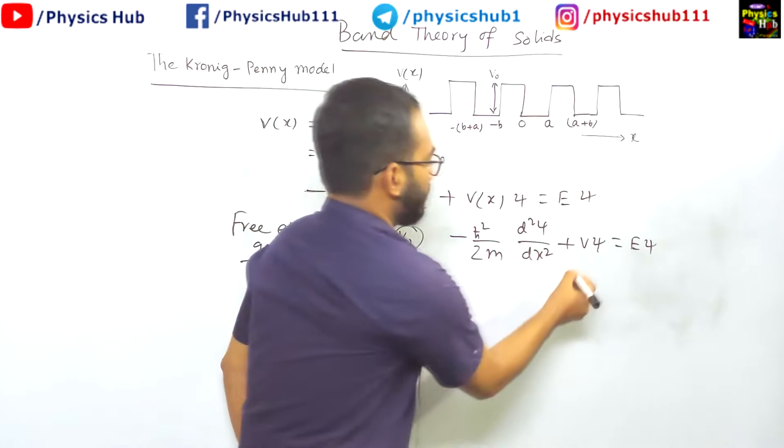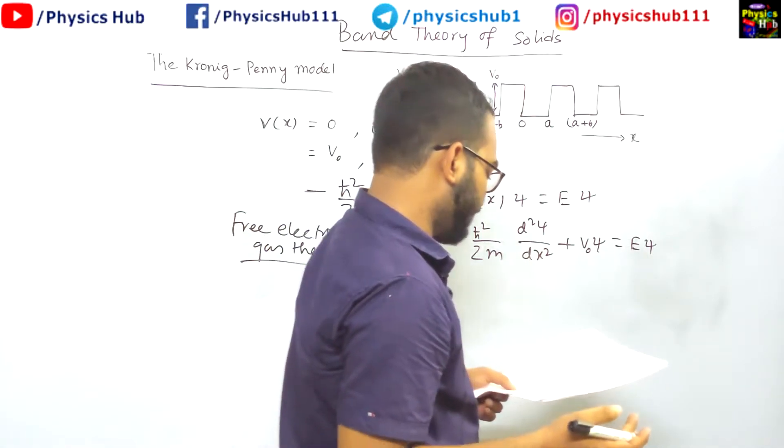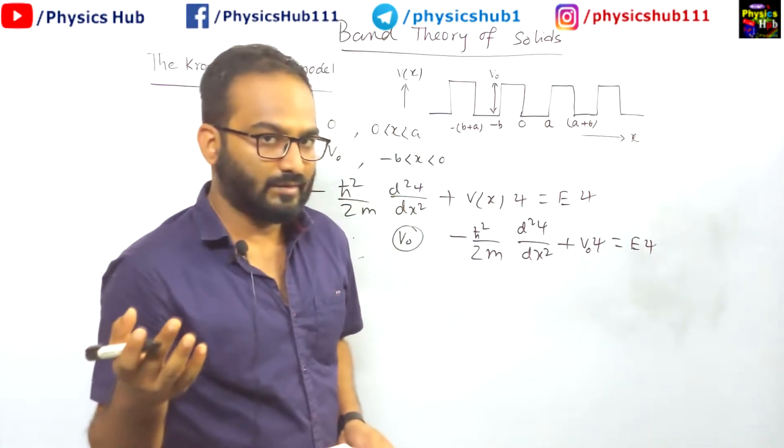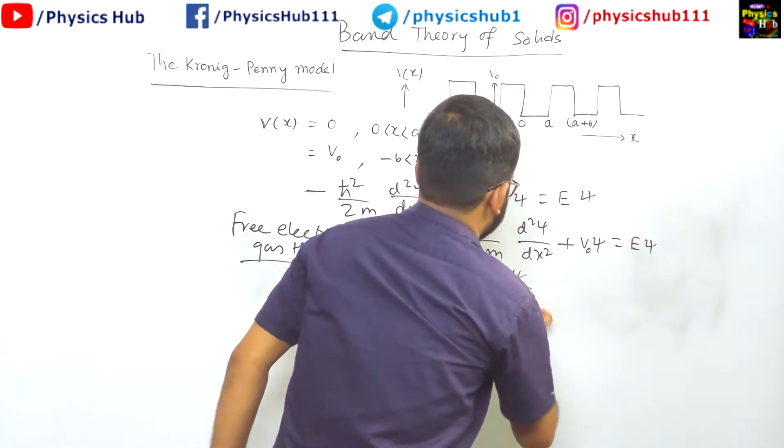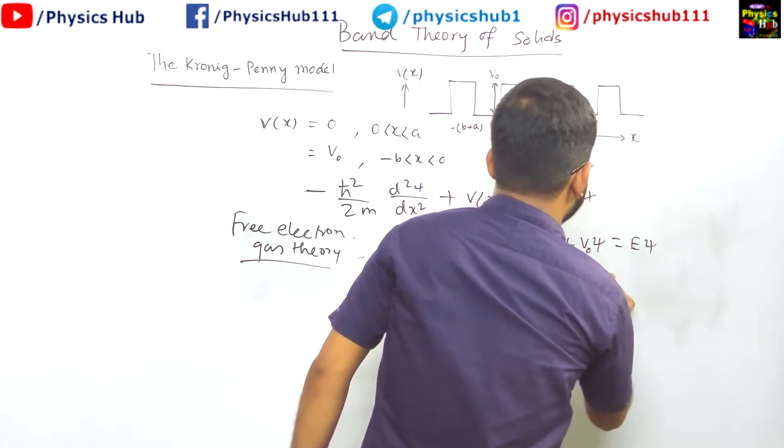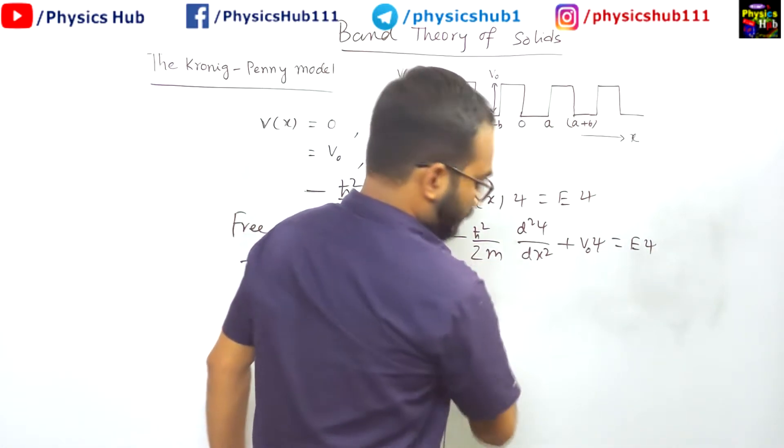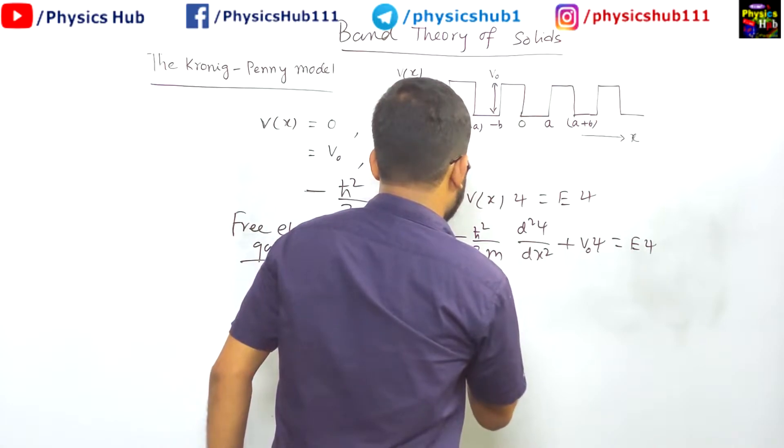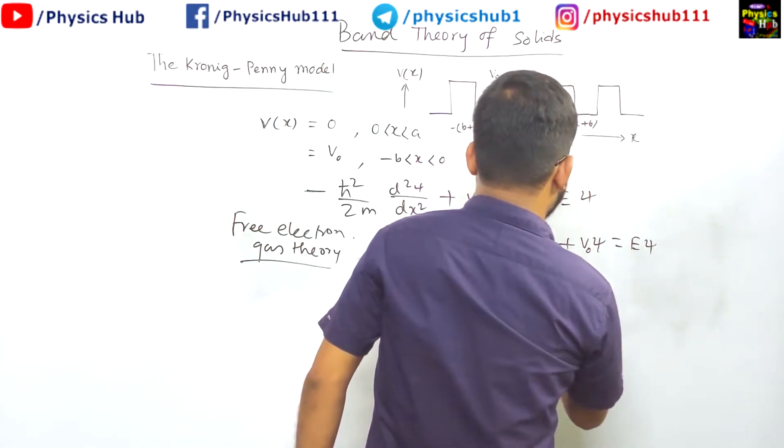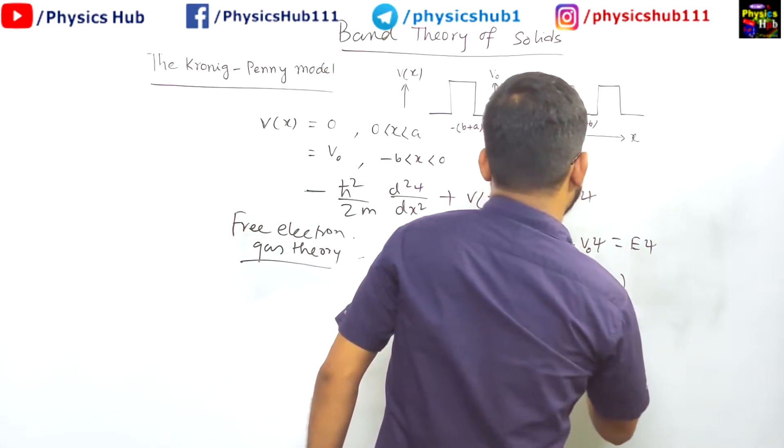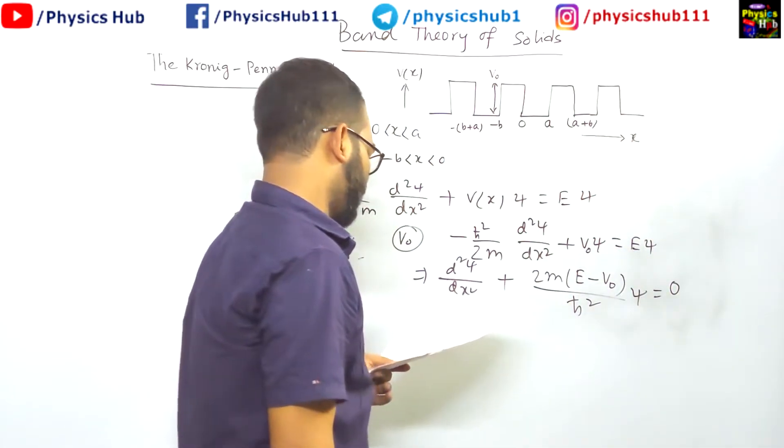So this kind of Schrödinger equation you get and you know the solution. You can also write it in this way minus h bar square by 2m d square psi by dx square, we have taken this minus and this will become plus 2m times e minus v0 upon h bar square into psi equals 0. I hope everything is correct, yes.